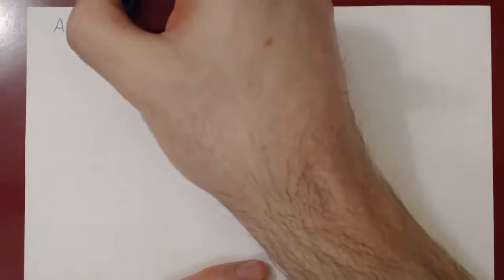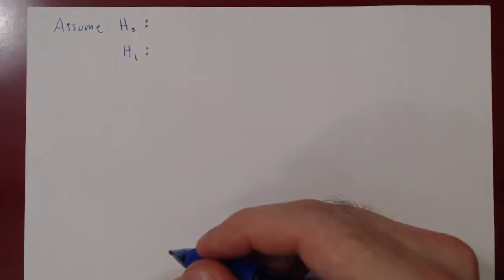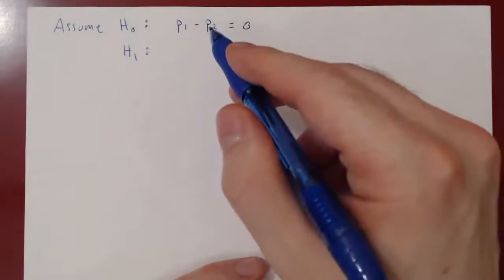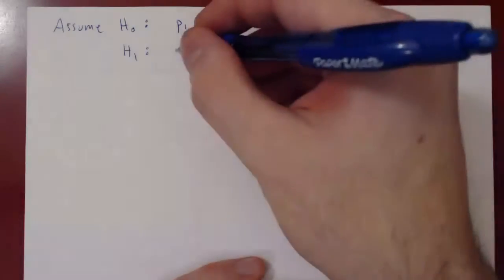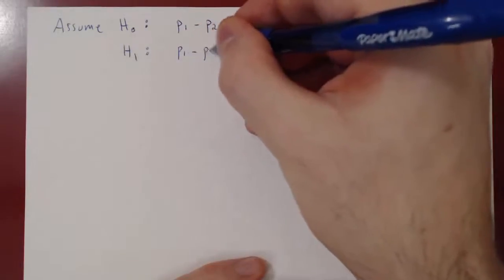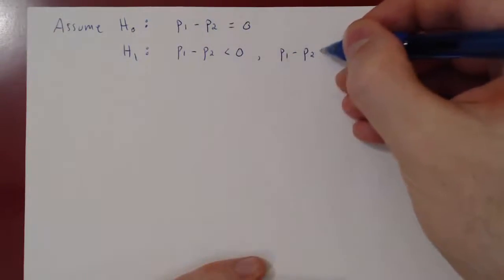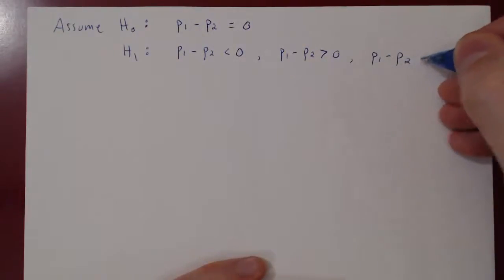Consider our two hypotheses. We will always be under the assumption of H0, then we formulate H1. We are considering a difference of two proportions. H0 is the hypothesis of no change, so H0 will always be that p1 minus p2 equals 0 — that there is no difference between the proportion of population one and the proportion of population two. For H1, there are three possible hypotheses: p1 minus p2 is less than 0, p1 minus p2 is greater than 0, or p1 minus p2 is simply not equal to 0.